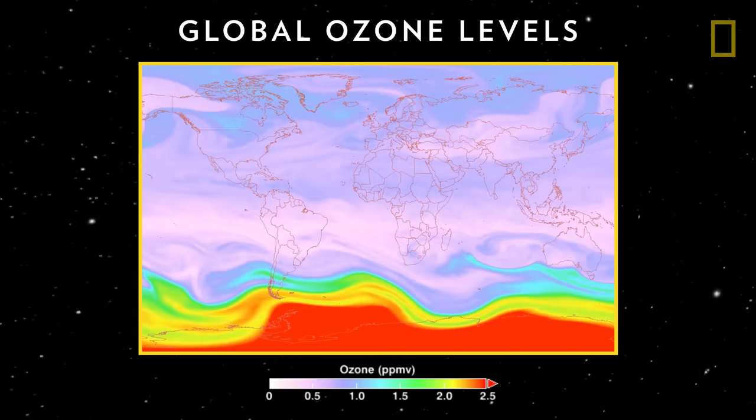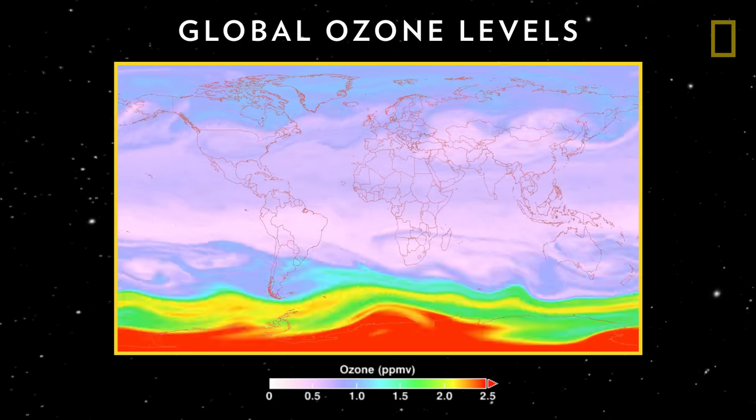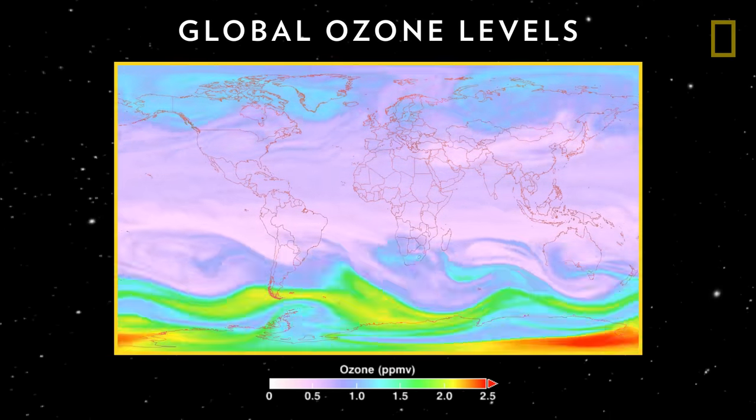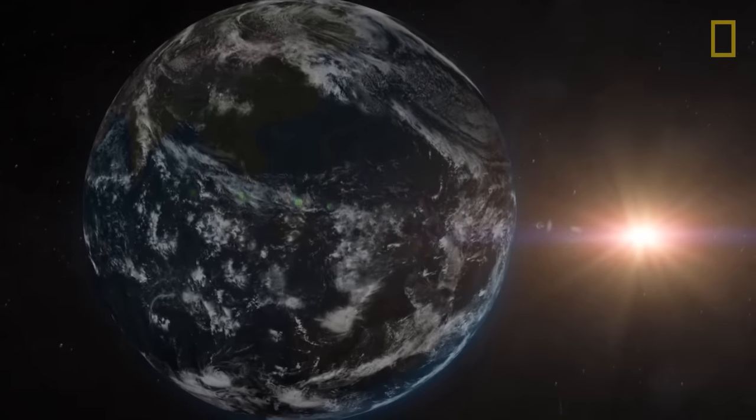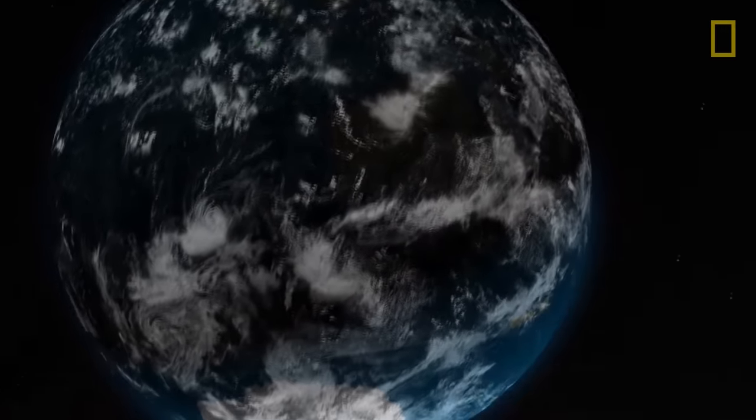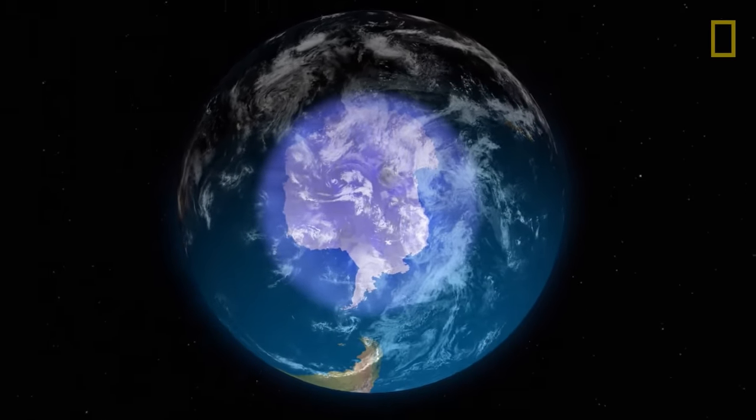Areas of damage in the ozone layer are often called ozone holes, but that name is misleading. Ozone layer damage is more like a thin patch with the thinnest areas near the poles.